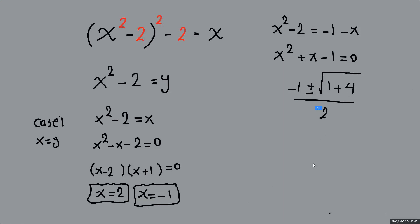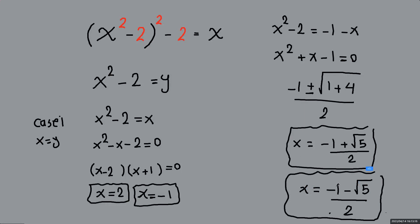So the values of x would be, again, two values. x could be either negative 1 plus square root of 5 over 2. That would be the third solution. And we're going to have another one which is going to be the same thing but a little different. I'm going to have negative 1 minus square root of 5 over 2. This is going to be the last solution. So if you found the video useful, you know what to do.